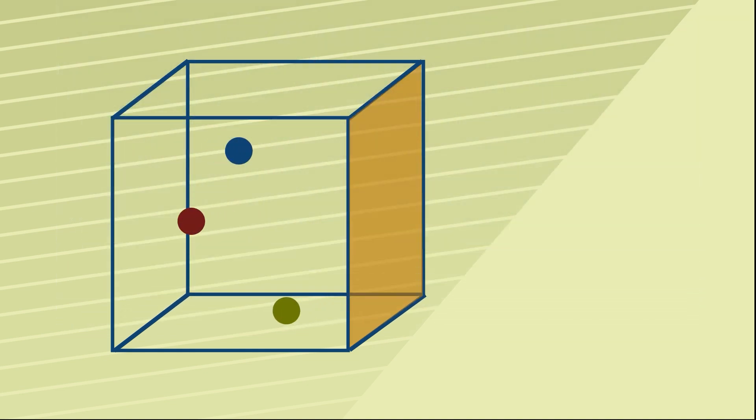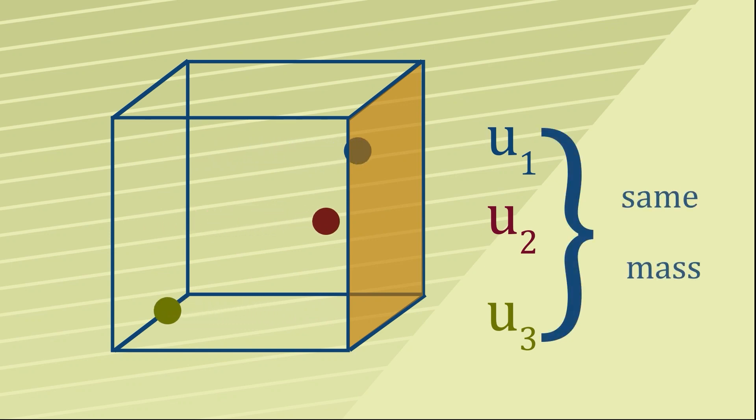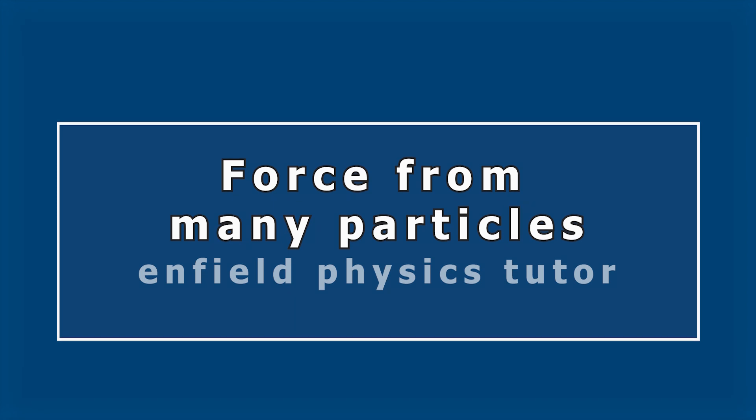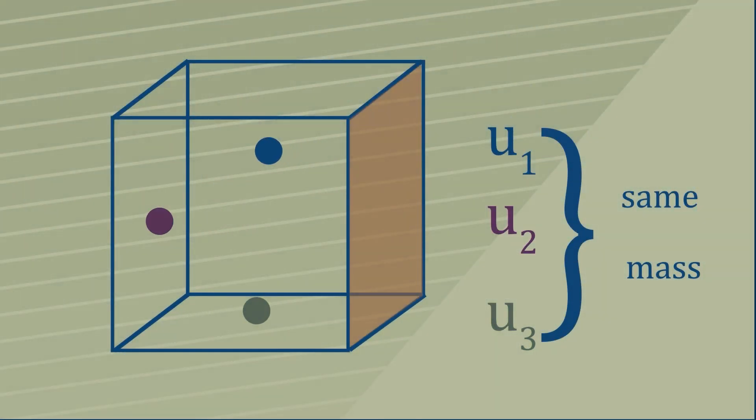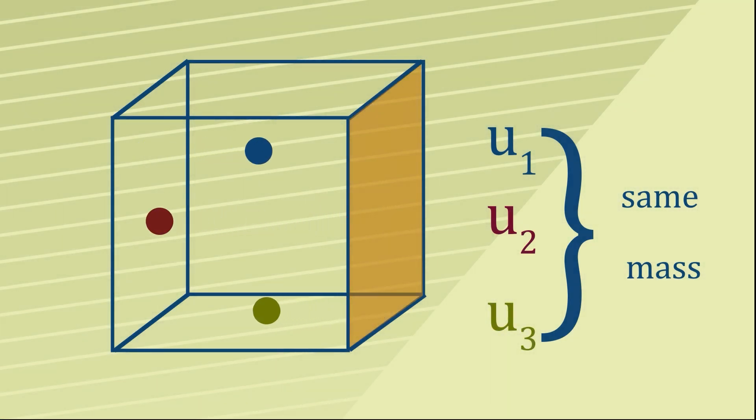So our next step is to move on now and have lots of particles moving at different speeds u₁, u₂, u₃, flying backwards and forwards but only in the x direction, and then they're all colliding with the orange wall. It's actually fairly straightforward to work out what the total force would be from all these different particles all traveling along the x direction and colliding with the wall.